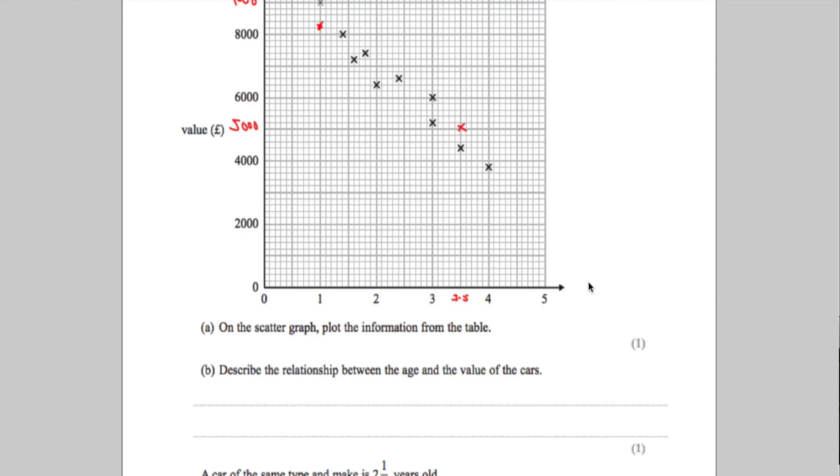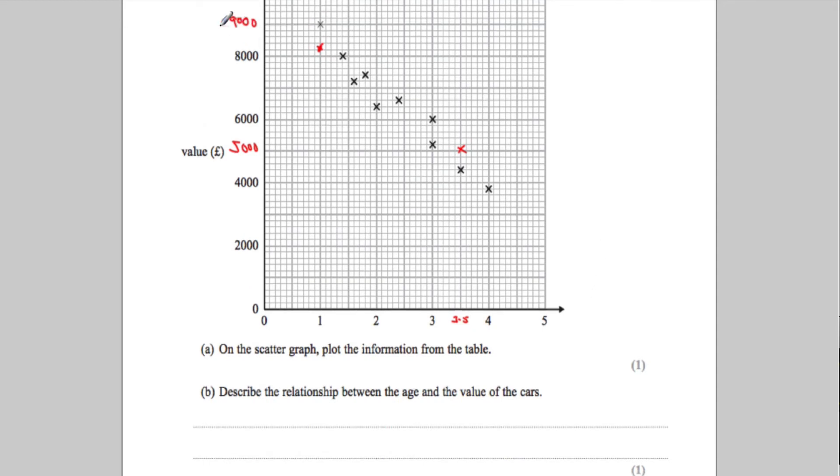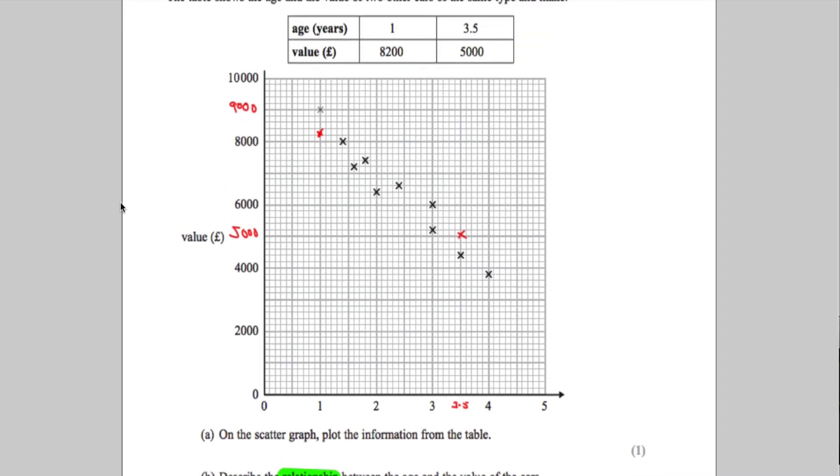Second part says describe the relationship between the age and the value of the cars. Relationship means that we've got to describe it in the context of the question. It didn't ask for the type of correlation, it asked for the relationship. So what is the scatter graph suggesting? If I look at it, as the age increases, the value decreases.